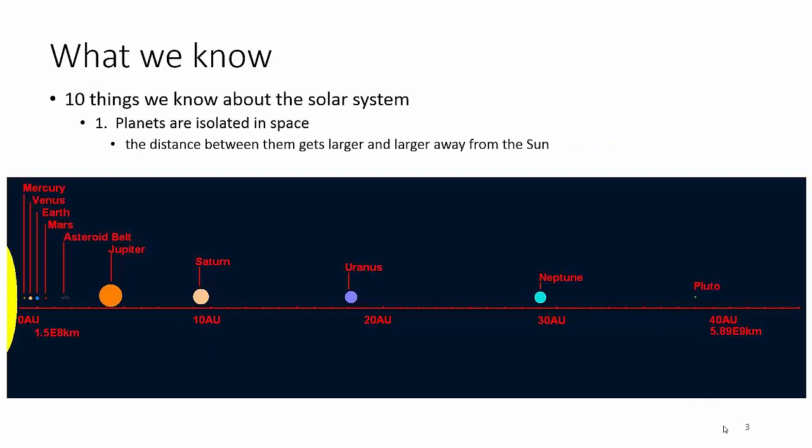So if you're trying to figure out how did we get here, there are certain things you have to take into account. So 10 important things you have to account for. First one is that planets are isolated in space. What this means is as you get further away from the sun, the distance to the sun gets larger and larger. So the distances between the planets get larger and larger. And you can kind of see that with this picture down here. We've got the inners all kind of squished together. And then look how far apart each one of the outer ones is.